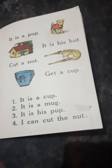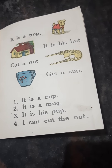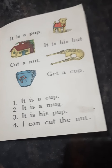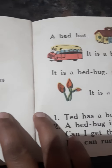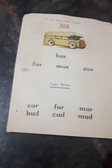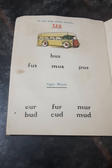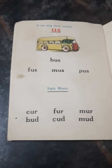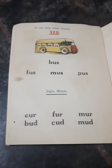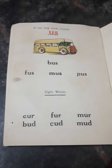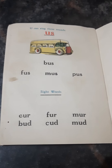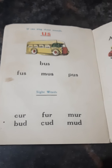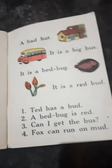The words ending with -ut: hut, nut, butt, cut, gut, rut, and tut. The words ending with -up: cup and pup. It is a pup. It is his hut.